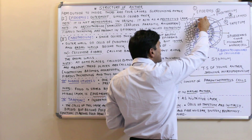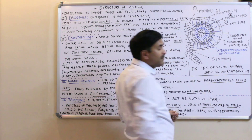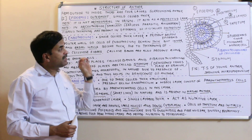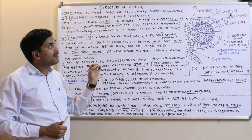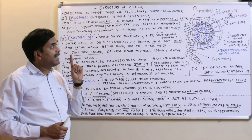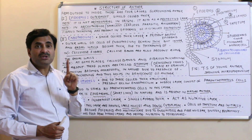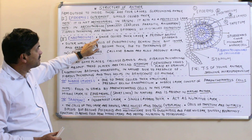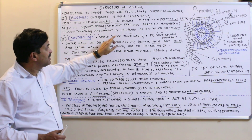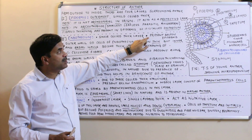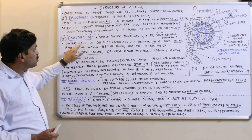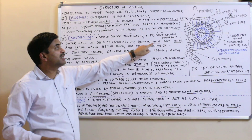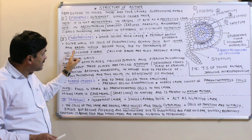The second layer is the endothecium. The endothecium is present below the epidermis and above the middle layers — that is, between the epidermis and middle layers. It is a very important layer in the anther and shows certain changes right up to maturity. The endothecium is also single cell thick, just like the epidermis.